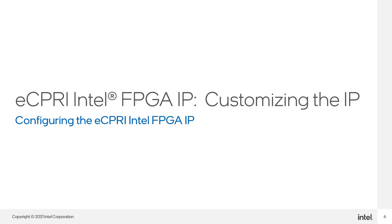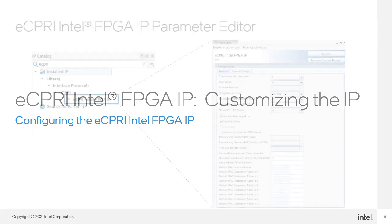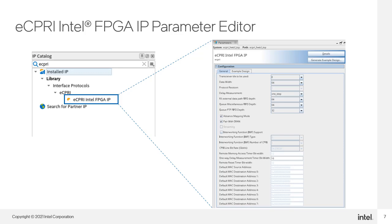Let's start with configuring the IP. The ECPRE IP parameter editor is the tool within the Quartus software that lets you customize an instance for your design using all of the configurable options available in the IP. The parameter editor is found in the IP catalog in both the Intel Quartus Prime Pro software and Platform Designer. Locate it under Interface Protocols and then ECPRE, or you can just type ECPRE in the search field at the top. Double click to open the parameter editor.